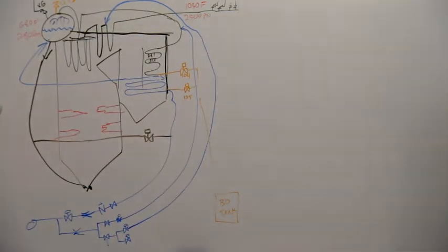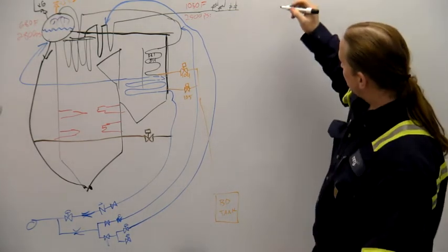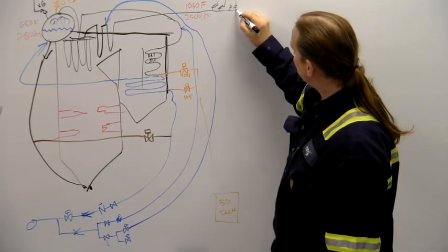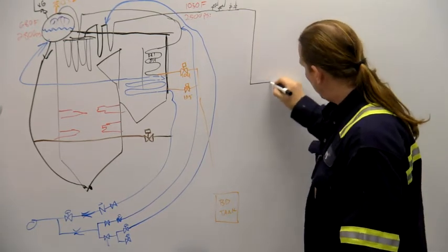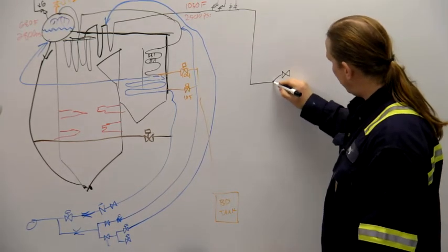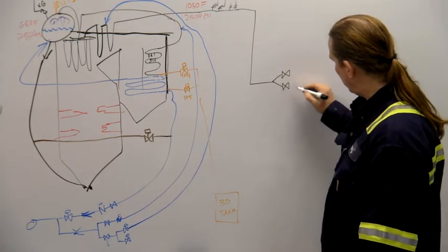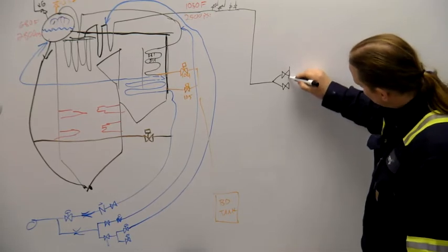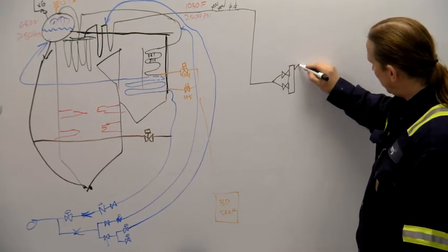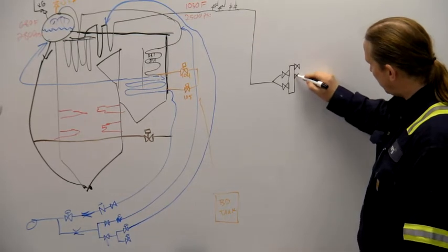Alright, so now we're going to get the steam through the turbine and then back to the feedwater system. This main steam header runs down and splits off to two main steam stop valves, and those discharge to a common steam chest. Then there are four control valves coming off of that.